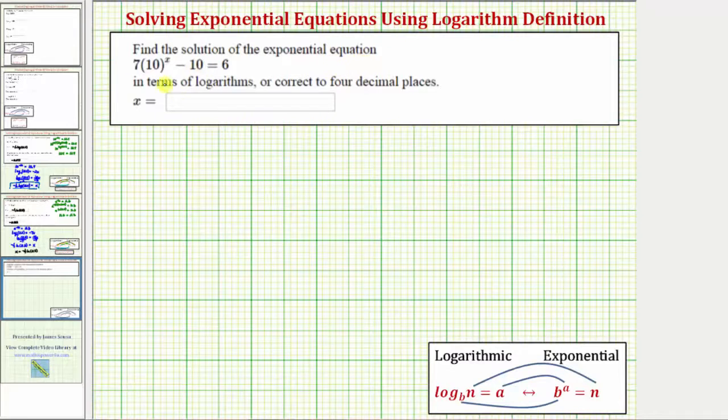We want to solve the given exponential equation in terms of logarithms or correct to four decimal places. So our exponential equation is 7 times 10 raised to the power of x minus 10 equals 6.